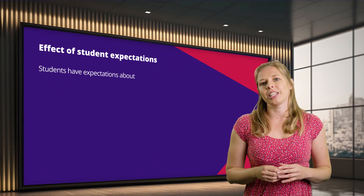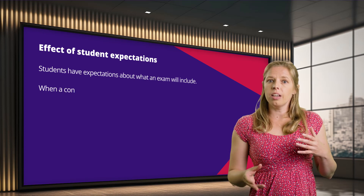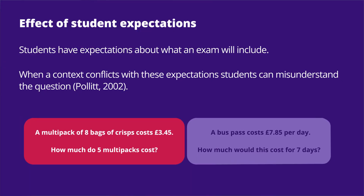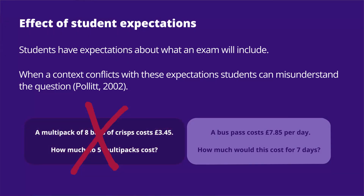Students have expectations of what an exam will include, and when a context conflicts with those expectations, misinterpretations can occur. In this first example, the question is asking about a multipack of crisps. Having seen multipacks, students subconsciously will start thinking about questions like these — and commonly, a question with a multipack would be asking students to divide to find the price of one bag. The most common error for this type of question is students trying to divide £3.45 by 5 or 8. Students are failing to spot that this question is actually a multiplication question. In the next example, the context is in keeping with the maths involved: you're given the cost for a day and need to work out the cost for a week, keeping with the student's expectations of what the question is asking.